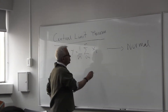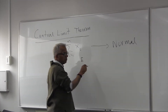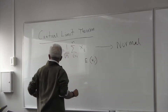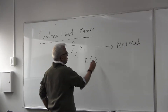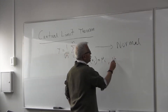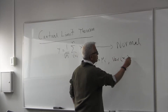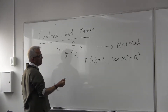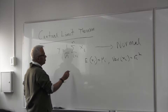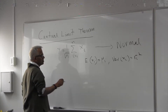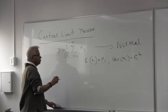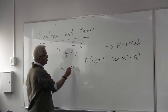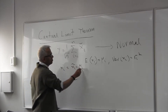So let us assume that the expected values of the xi's are some mean, and the variance of xi's are sigma_i squared. Rather than deal with this quantity, just to make it simpler, I am going to define xi tilde to be the old random variable minus the mean.